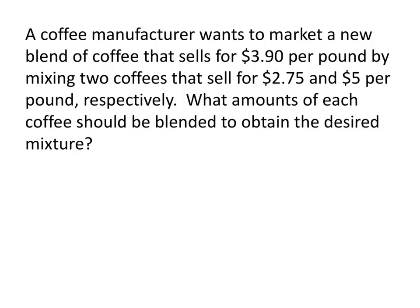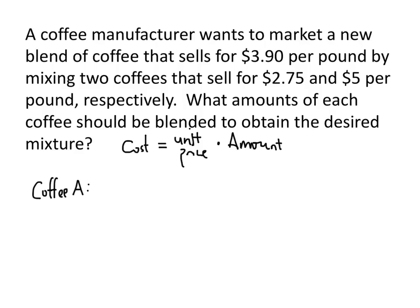The fundamental concept we need to understand is that the total cost of a product equals the unit price times the amount. We don't yet know how much of the $2.75 coffee or the $5.00 coffee we'll use — I'll call those coffee A and coffee B. The cost of using some amount of coffee A is the unit price, $2.75, times the unknown amount, which I'll call x.